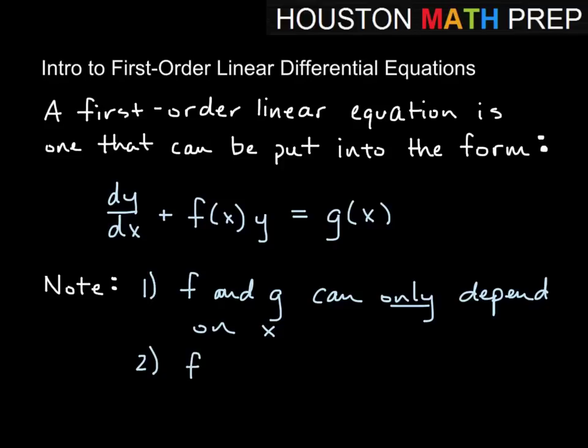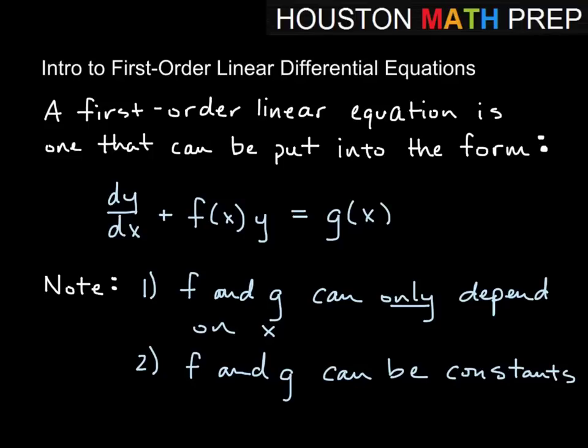The second thing is that f and g are allowed to be constant functions. So instead of some function of x times y, maybe it's a constant times y — like 3 times y — and on the right-hand side maybe you have zero or negative pi. So f and g can depend at most on x, but they could also be constants. If you see anything that can be put into this form, we'll be treating it as a linear equation.